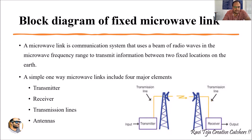Let's see what the transmitter, receiver, transmission lines, and antennas do. If you see here, there are two antennas — one at the transmitter end and another at the receiver end. The transmitter is connected to its transmitting antenna using a transmission line, and the receiver antenna on the other end is also connected to the receiver through a transmission line.